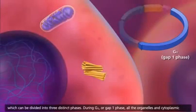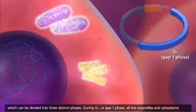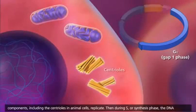During G1 or GAP1 phase, all the organelles and cytoplasmic components, including the centrioles in animal cells, replicate.